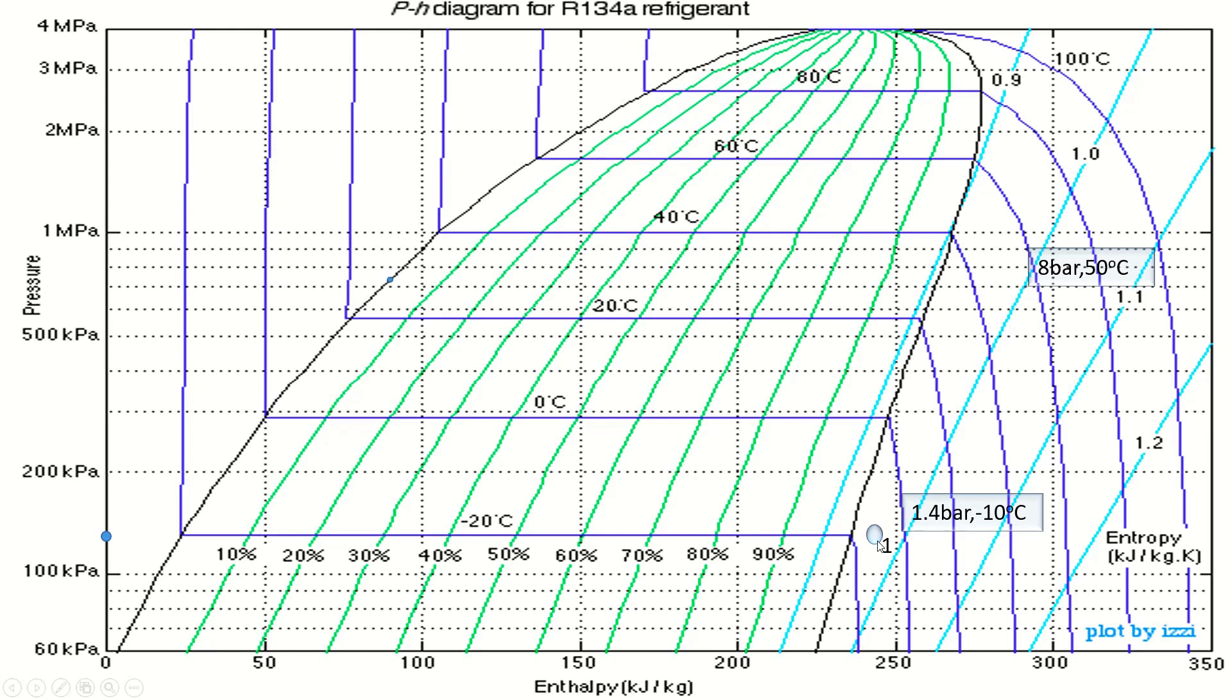Point 2 is at 8 bar and 50°C, that means 0.8 megapascal and temperature is 50°C, between 40 and 60. This is Point 2. This compression process occurs.